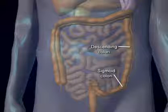The colon then descends on the left side, and this section is appropriately called the descending colon. It finally takes the shape of an S, and this segment is known as the sigmoid colon.